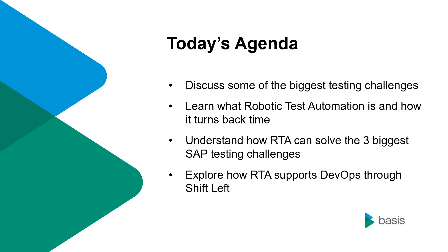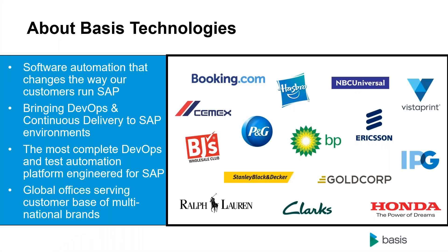Today we're going to have more of a conversational style where we talk about some of these challenges. On the agenda: we're going to look at some of the biggest testing challenges and how Robotic Test Automation can help address those, and also how it can support DevOps through the concept of shifting left. We were planning to be on video today but unfortunately the gods of broadband have intervened, so do bear with us if there's the odd click or misstep as we go through.